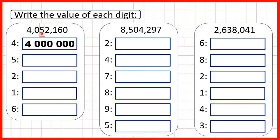Now this five is in our ten thousands so that stands for fifty thousand. That's five with four zeros on the end because we can see that in our number after the five we have four digits. The two is in our thousands place value so the value of the two is two thousand.